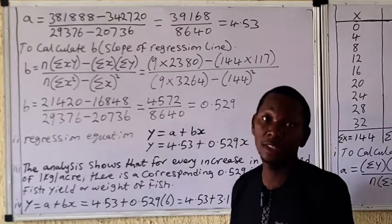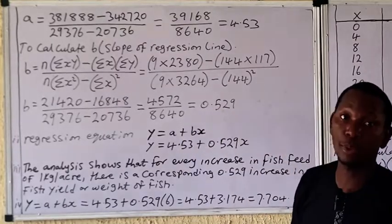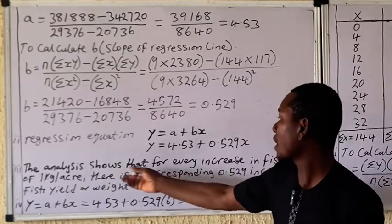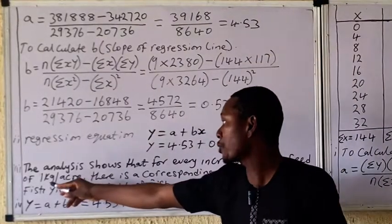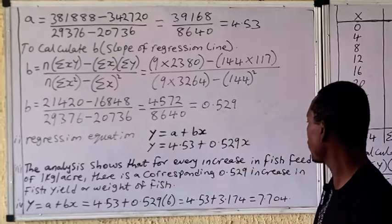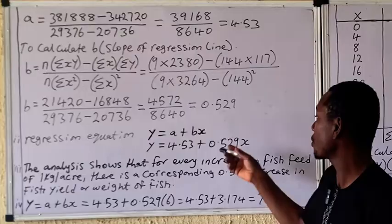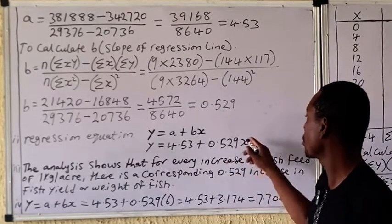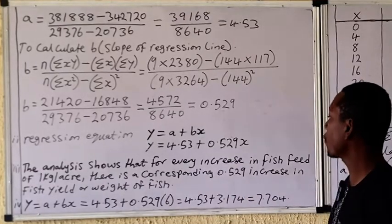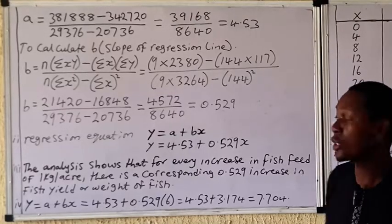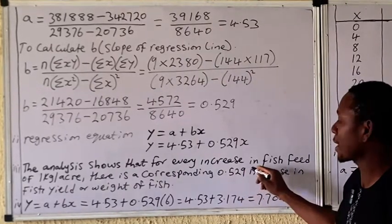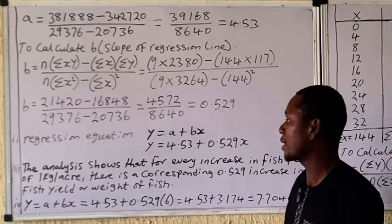They ask you to carry out a regression analysis. The analysis shows that for every increase in fish feed by one kg per acre of the pond, there will be a corresponding increase in the value of y. If you increase x by one you see the value change; increase it to two and you see the increase again. For every increase of one kg per acre of fish feed, there is a corresponding increase in the yield of fish of 0.529 kg per acre of the pond.